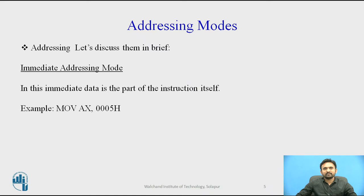Now let us discuss them briefly. In immediate addressing mode, you transfer the source — an immediate byte or word of data — into the destination register or memory location. The source operand is a constant and the operand comes immediately after the opcode. For this reason, the addressing mode executes quickly. Immediate addressing mode can be used to load information into any of the registers except the segment registers and flag registers.